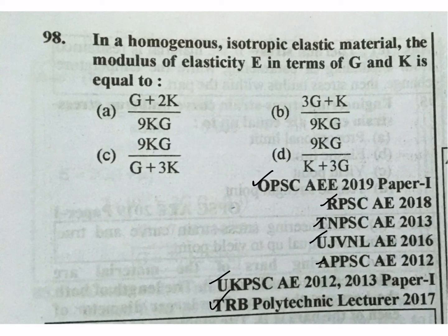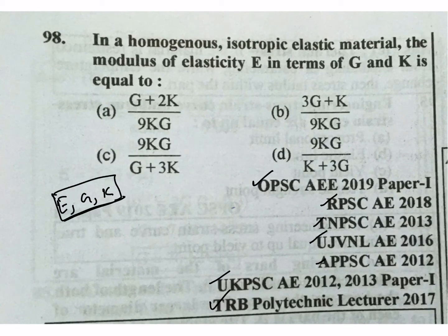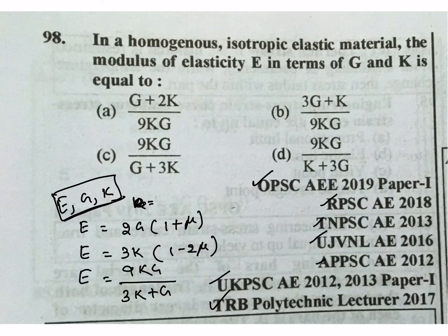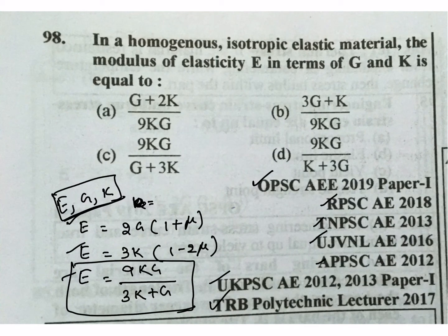Same question: the EGK relation — E, G, K relation. These three relations are very very important. The relation is E = 9KG / (3K + G). From the options, 3K + G — C is the correct answer.